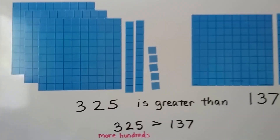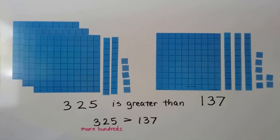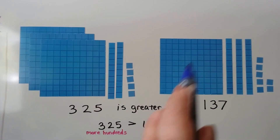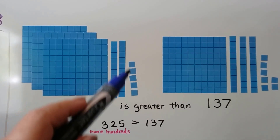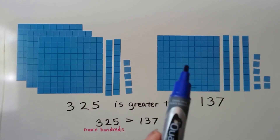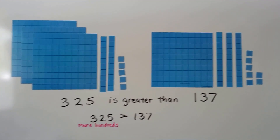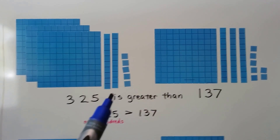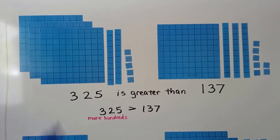Here we have two different sets of models. We've got 1, 2, 3 hundreds, 2 tens, and 5 ones — we have 325. On this side, we only have 100 and 3 tens and 7 ones — we have 137. 325 is greater than 137. There's more hundreds; we can see that right away.